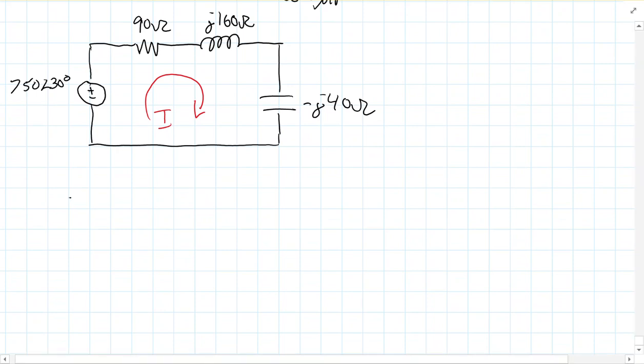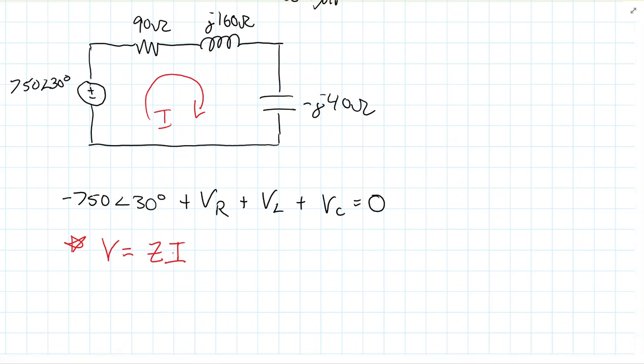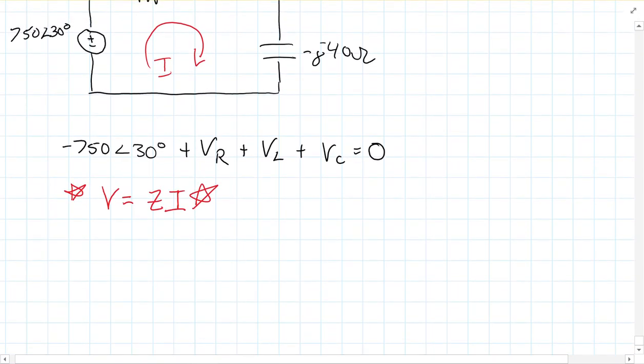Now, of course, I'm in phasor mode here, or phasor domain, so I'm looking at the phasor current. But if I do this here, I'd have negative 750 at an angle of 30 degrees, plus the voltage across the resistor, plus the voltage across the inductor, plus the voltage across the capacitor, is equal to zero. But then, what I want to remind you here, remember, the key thing that we learned in a previous lesson was that in steady state, voltage is always impedance times current in phasor domain. It doesn't matter whether it's a resistor, an inductor, or a capacitor. Voltage is always impedance times current.